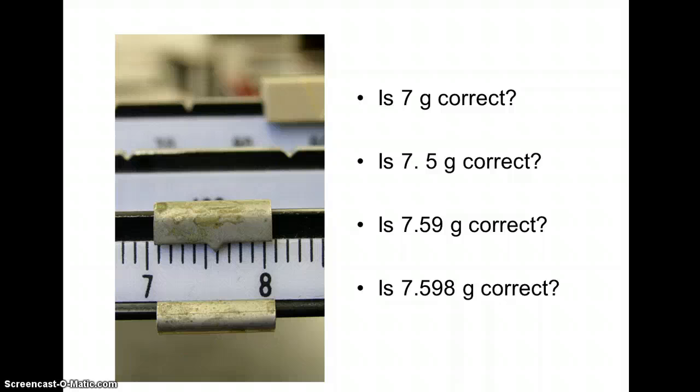7.59? Well, I know I'm past the 7.5. The 9 is kind of a guess, but that's okay. Remember, we want an estimate, an intelligent guess on our last digit. What if I'm really, really close to 7.60? Could I say 7.598? Not really. That's adding a guess on top of a guess just because more digits seems better. It's not better, though. The best bet is 7.59 grams.